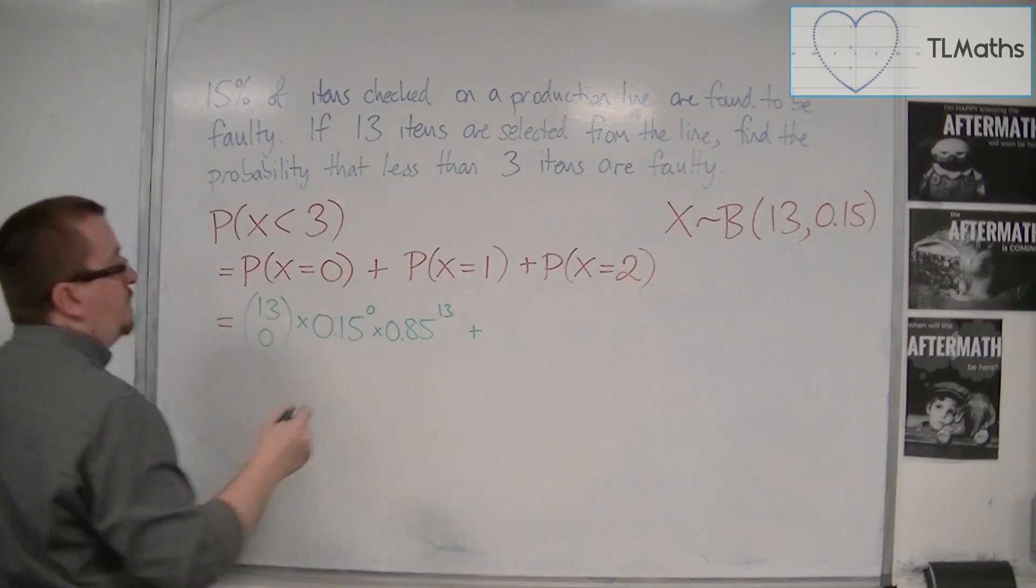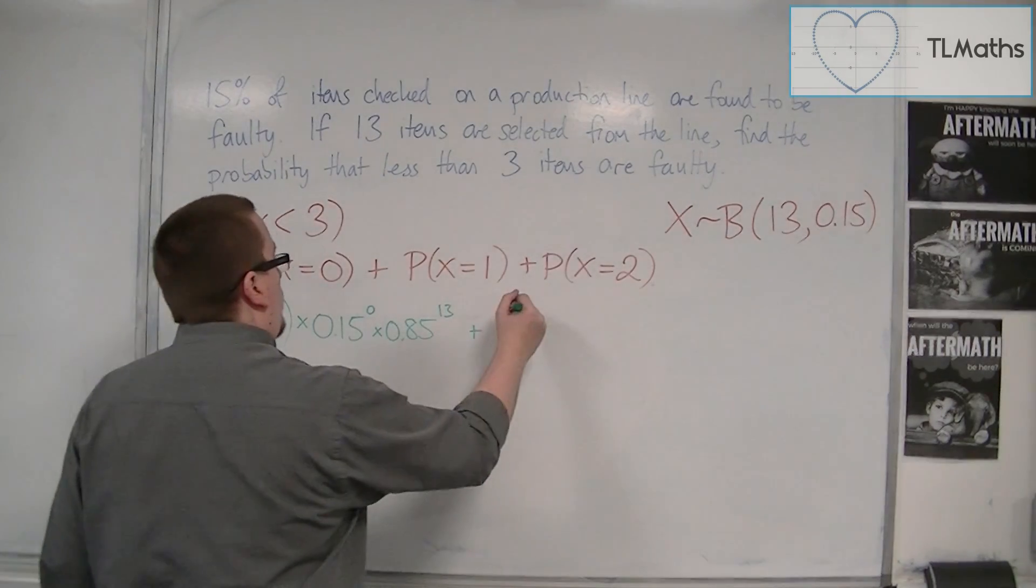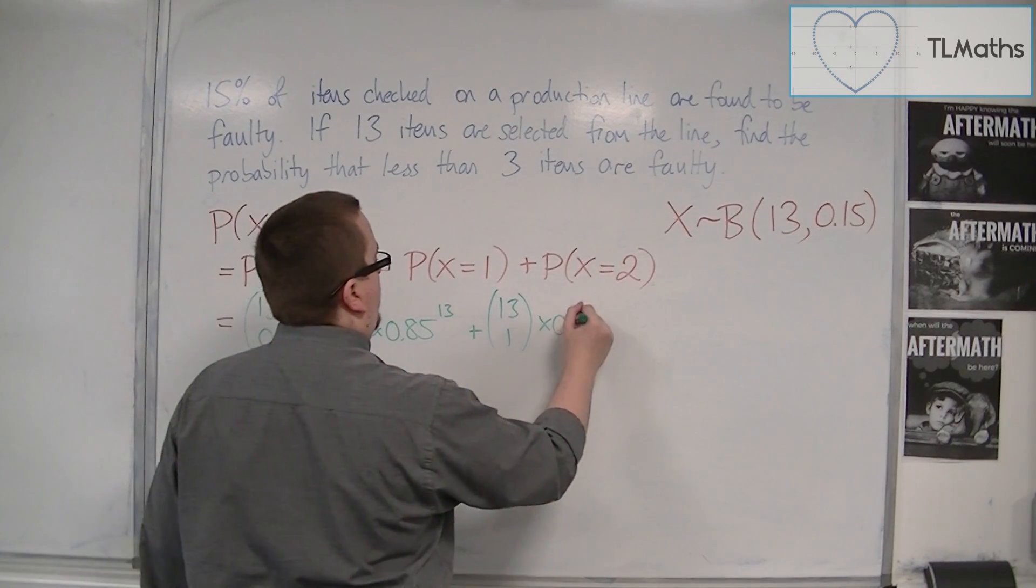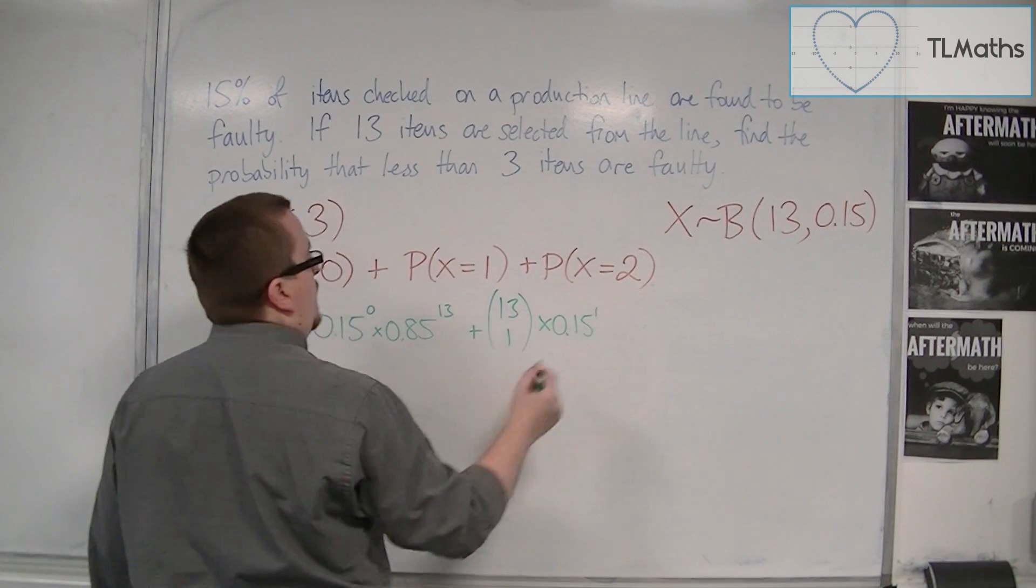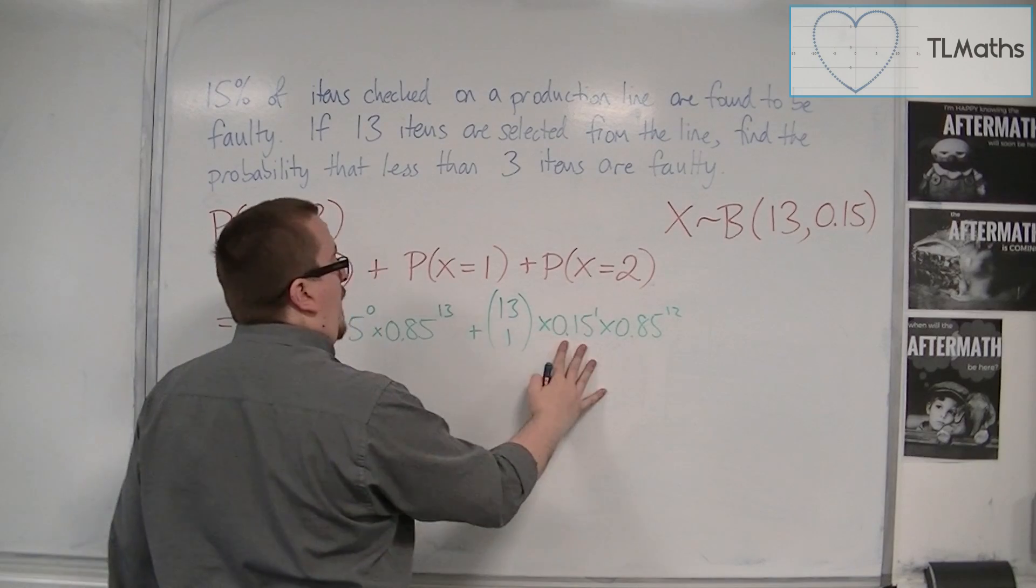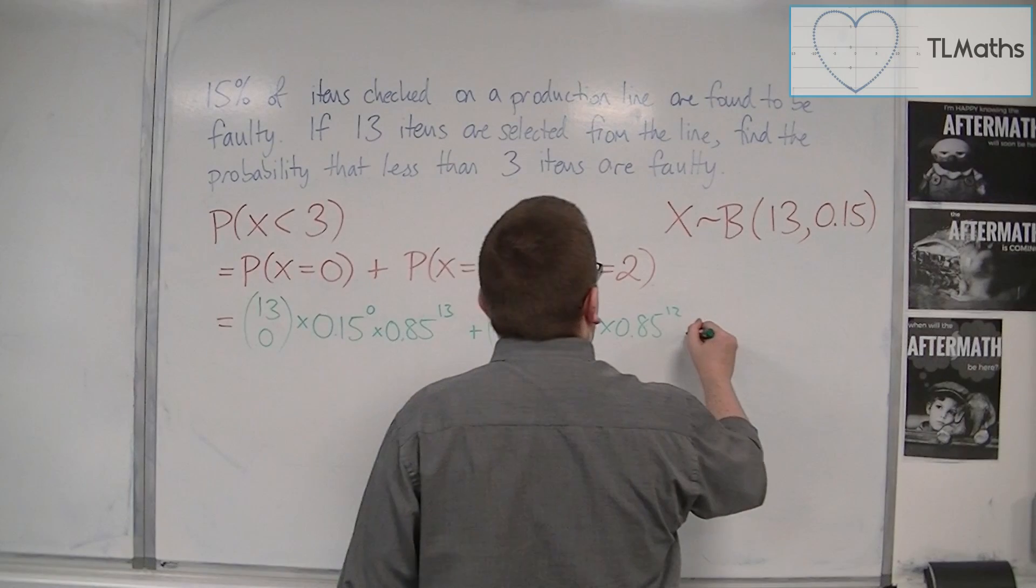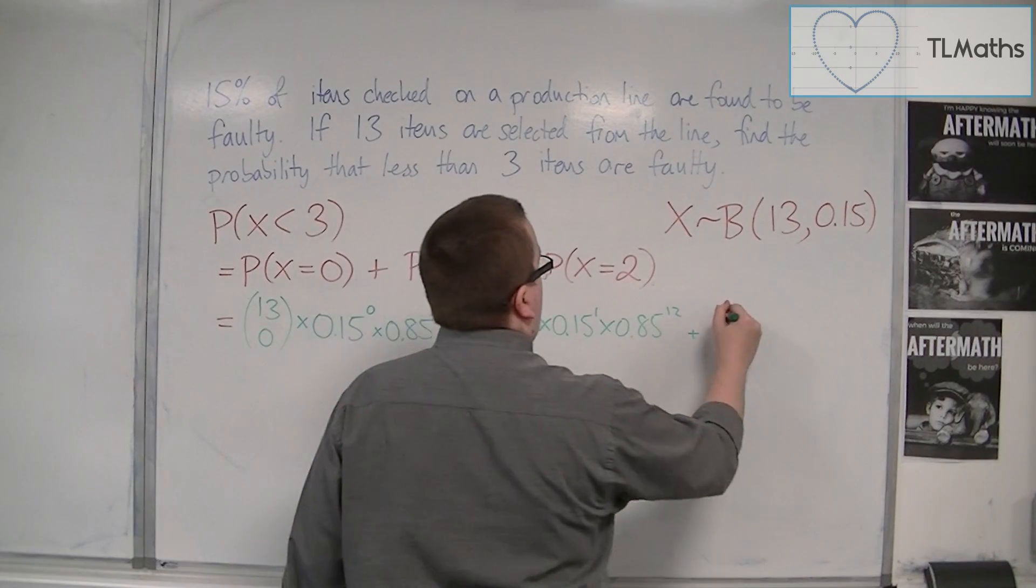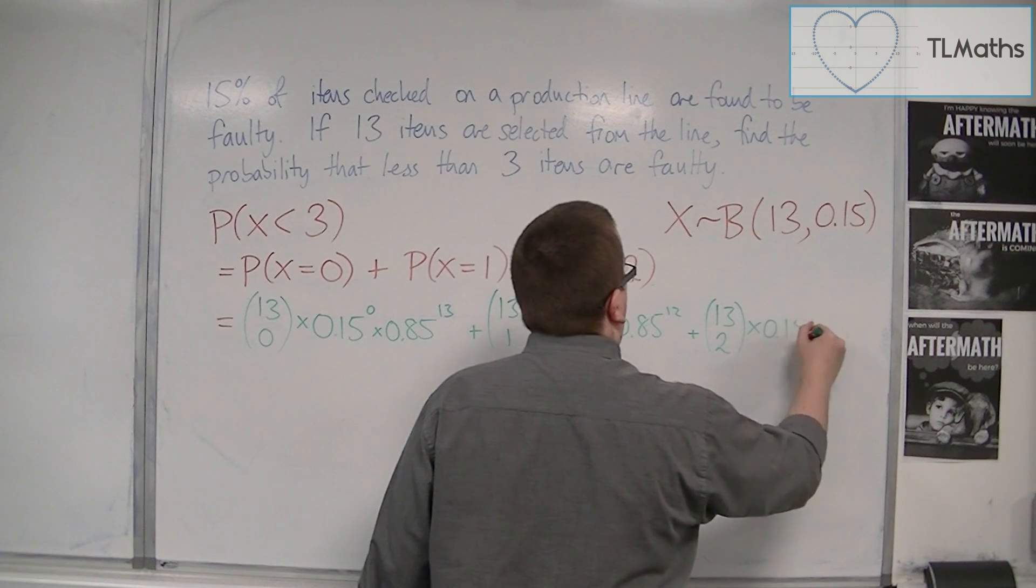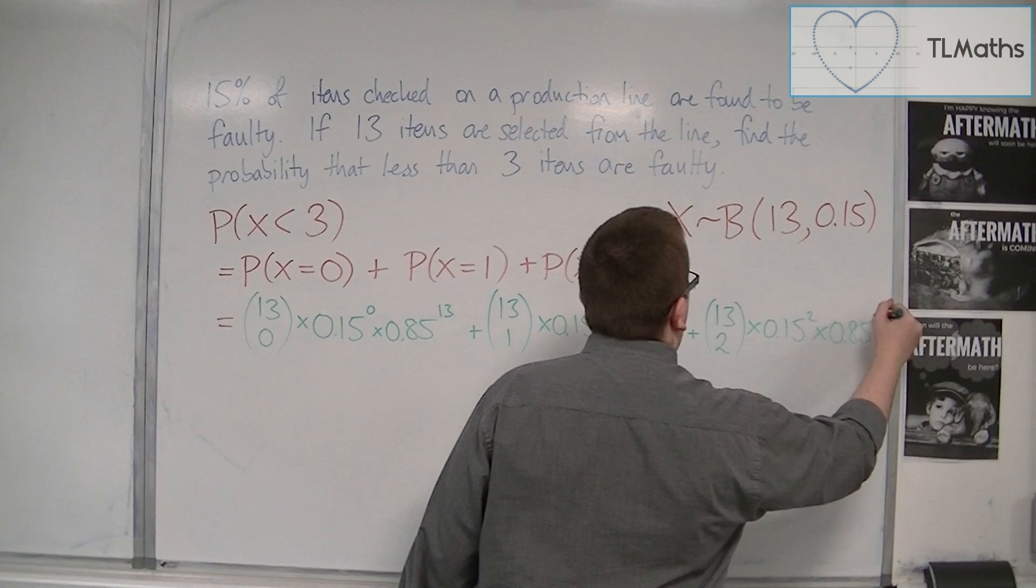Plus probability of X equals 1, so 13 choose 1, 13 NCR 1 times 0.15 to the power of 1 times 0.85 to the power of 12, because I want 1 that's faulty and 12 that aren't. And then finally, probability of X equals 2 is 13 NCR 2 times 0.15 squared times 0.85 to the 11.